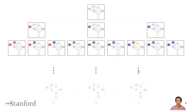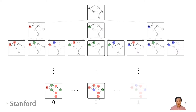At the very bottom of the search tree, we have a complete assignment to all the variables. Each complete assignment is labeled with zero if it's inconsistent — for example, if NT and SA are assigned the same color, or WA and NT share the same color. Here is an assignment that is good: all neighboring provinces have different colors, and this is denoted with a weight of one. In general, each state represents a partial assignment of colors to variables, and at the end we return any leaf that is consistent.